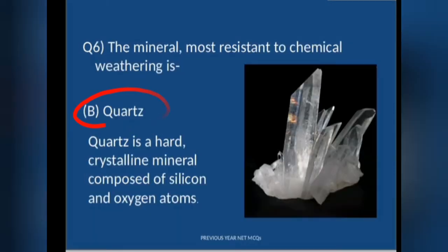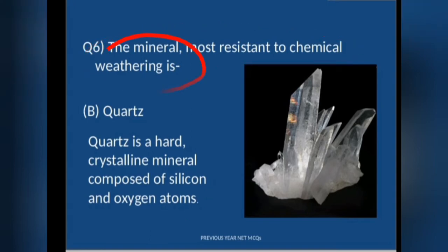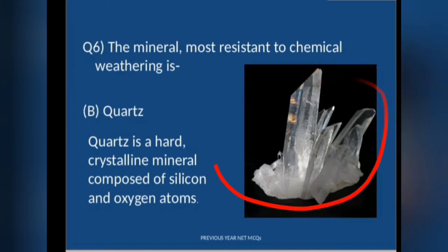Quartz is the mineral most resistant to chemical weathering because it is composed of silicon and oxygen atoms that are very highly bonded together. This makes quartz the most resistant to chemical weathering. The photograph here shows the structure of quartz.